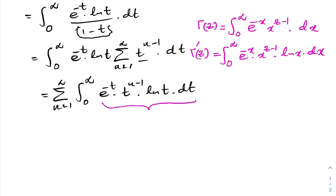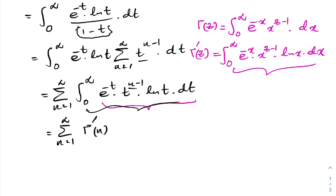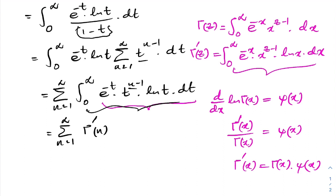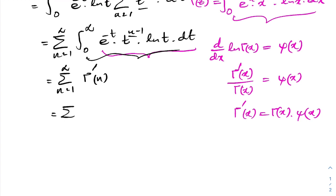We recognize that each integral in our sum matches Γ'(n). Recalling the digamma function: the derivative of ln(Γ(x)) equals ψ(x), so Γ'(x)/Γ(x) = ψ(x), which means Γ'(x) = Γ(x) · ψ(x). So our sum becomes the sum from n = 1 to infinity of Γ(n) · ψ(n).